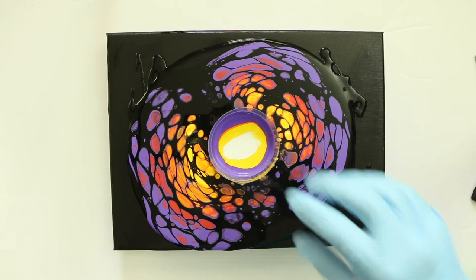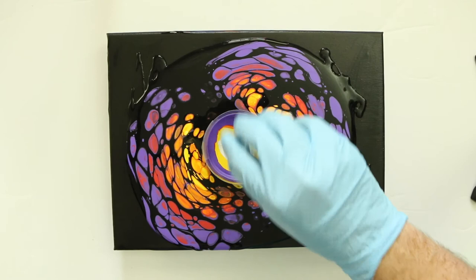You can either keep adding color to the middle until the entire canvas is covered or go ahead and take out the plastic and tilt the canvas. I'm going to go ahead and tilt the canvas just so you can see what that looks like.